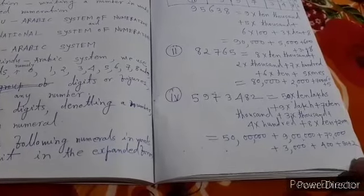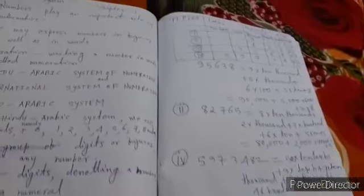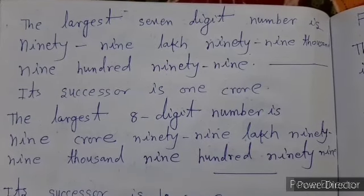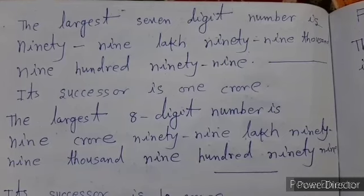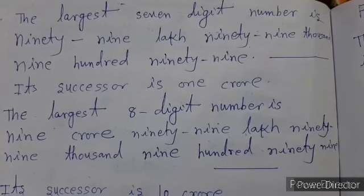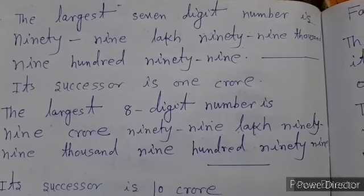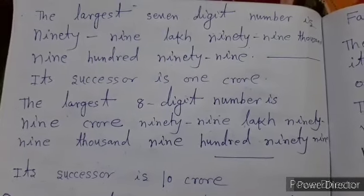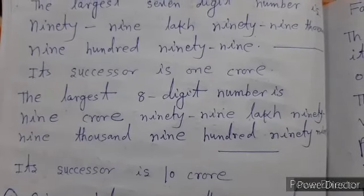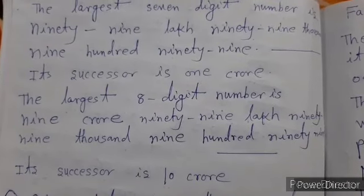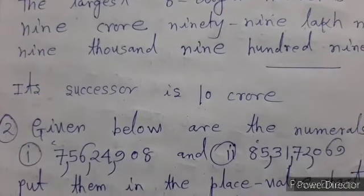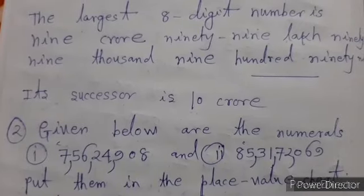In the same way we can write any number in the expanded form. The largest 7 digit number is 99 lakhs, 99,999. If we add 1 in it, its successor will be 1 crore. We can find successor of any number by adding 1. The largest 8 digit number is 9 crore, 99 lakhs, 99,999. Its successor is 10 crore.